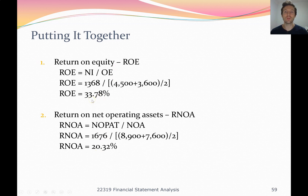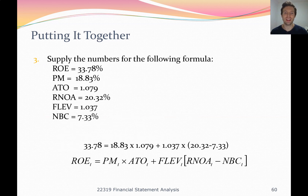The overall return on equity calculation doesn't change when you do advanced DuPont analysis compared to the simple ROE calculation. But what does change is you get an understanding of what part of the business is driving the returns — is it the operations or is it the financing effect?